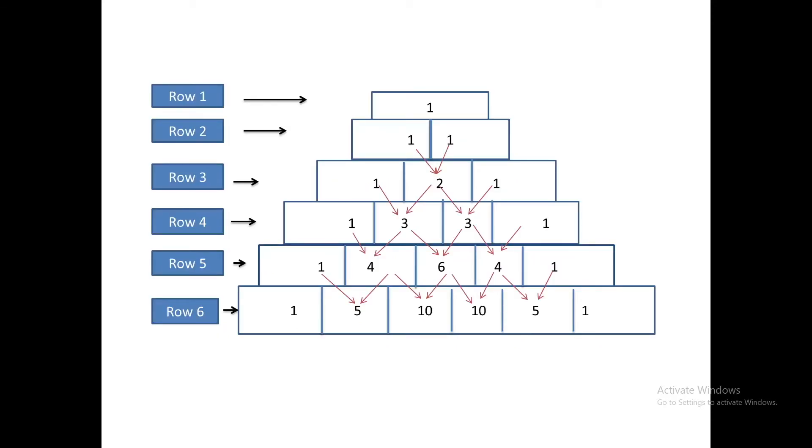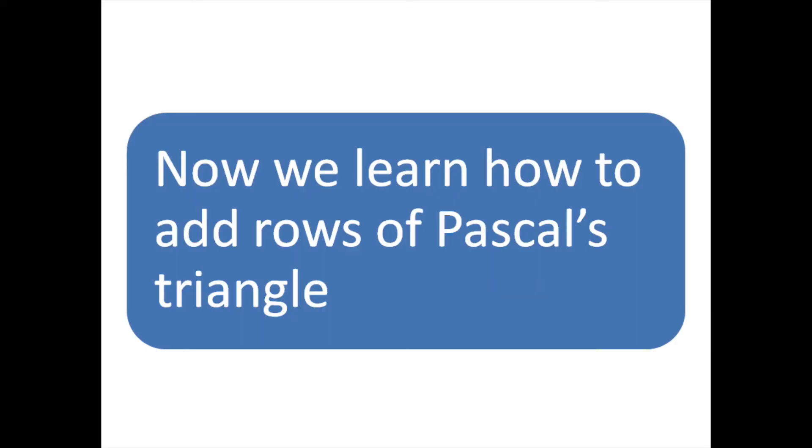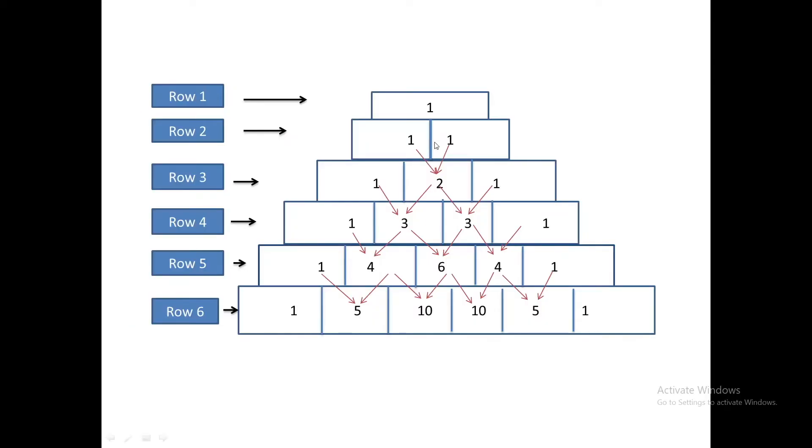This is a Pascal triangle with six rows. The binomial coefficients are used to form these rows. Add one and one to get two. Add one and two to get three, two plus one equals three. One plus three equals four, three plus three equals six, three plus one equals four. On the edges we always have one. If we want row seven, you add one plus five to get six, five plus ten equals fifteen, ten plus ten equals twenty, ten plus five equals fifteen, five plus one equals six.